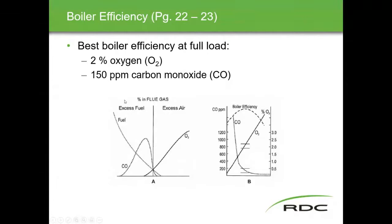Quick review of boiler efficiency from last year: at full load we strive for 2% excess oxygen or 5% excess air, and a CO measurement of 150 ppm. In third year that number was 200 ppm — that was more towards furnaces. Two percent oxygen, five percent air, and 150-200 ppm of carbon dioxide tells us we're running happily.